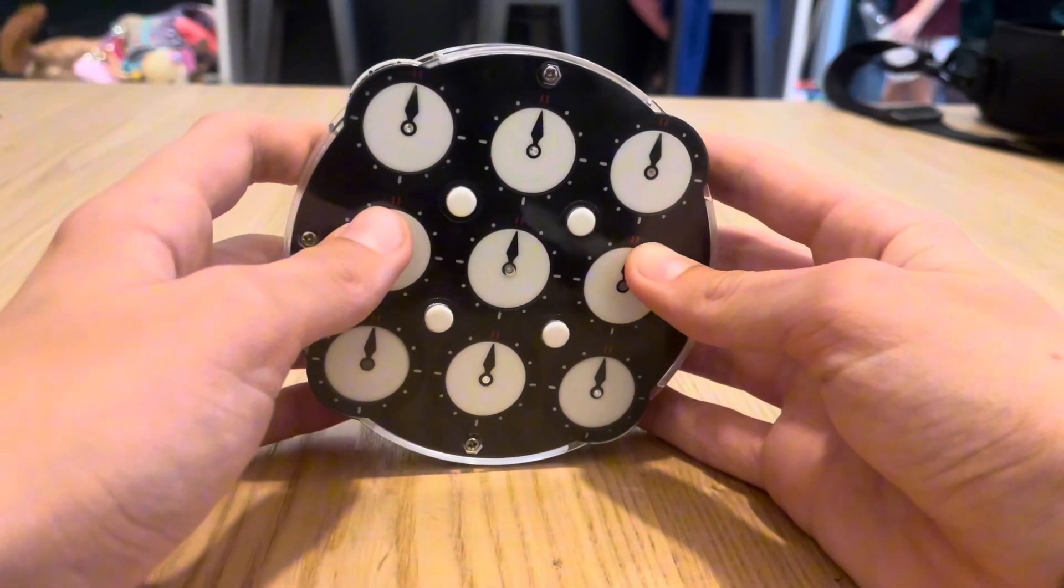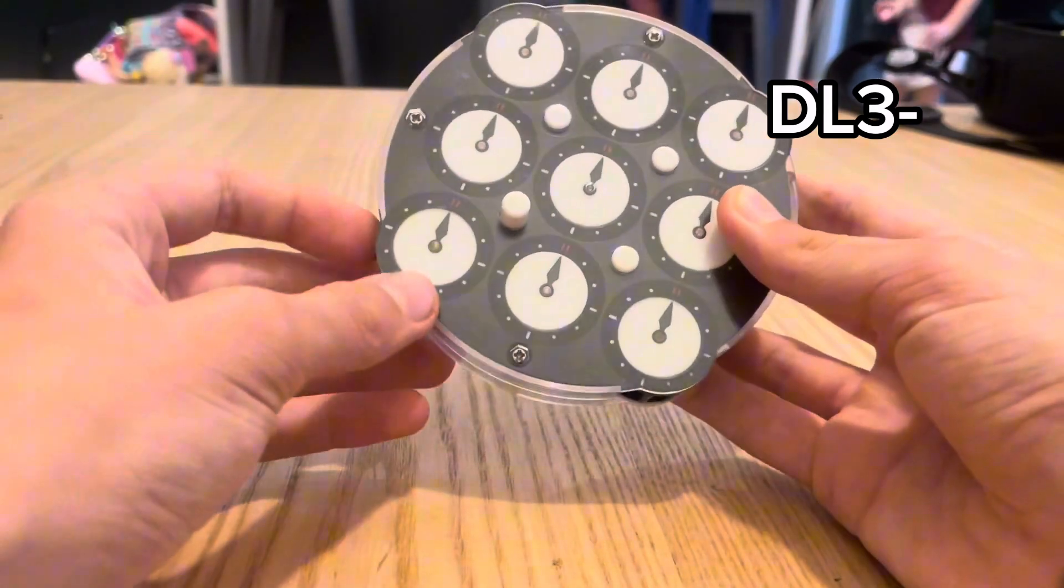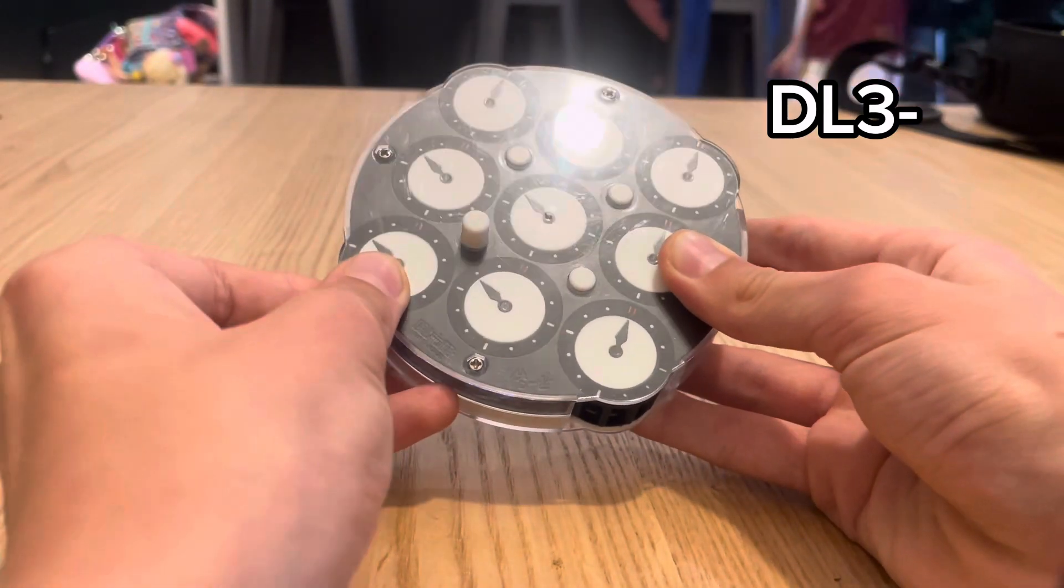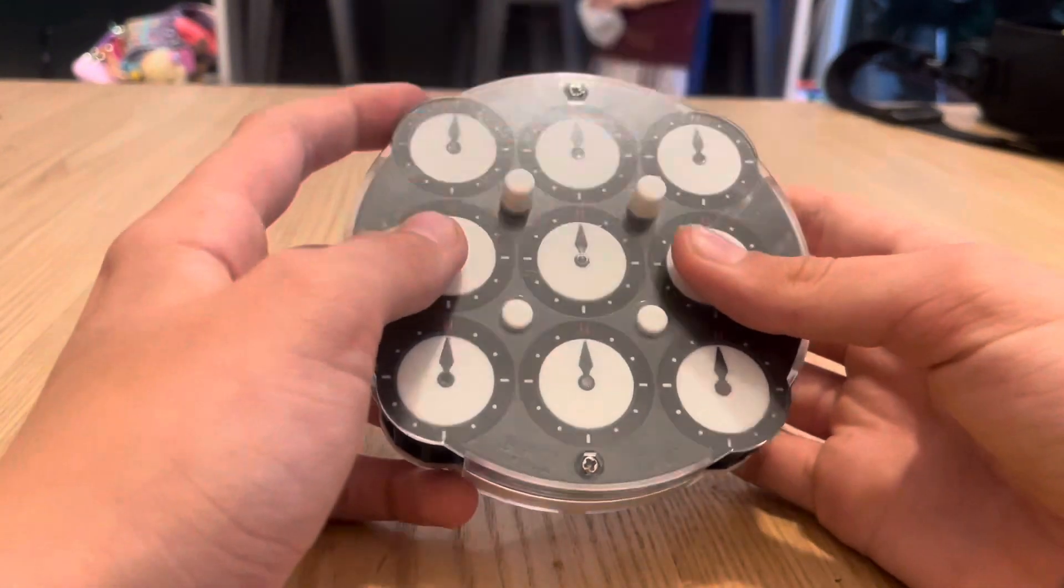If the scramble says DL, you're going to put the down left pin up. And if it says minus, for example, you're going to spin the dial three times backwards.